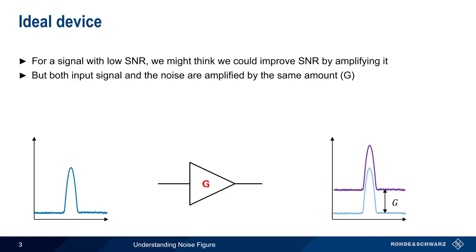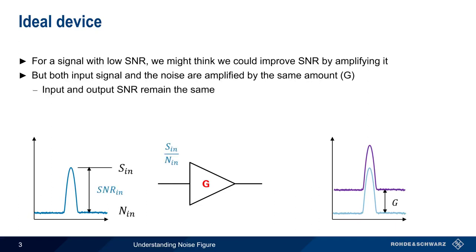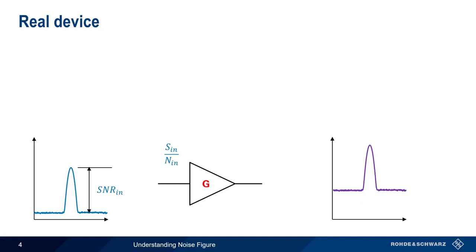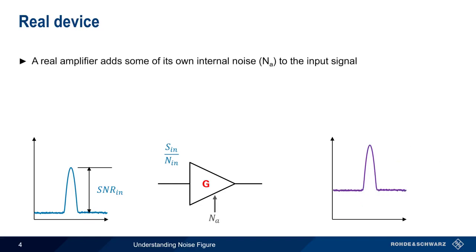This means that the signal-to-noise ratio of the input and the signal-to-noise ratio of the output would be the same. Note that in this example, all of the noise is external noise. An ideal amplifier wouldn't add any internal noise of its own to the signal. However, all real-world amplifiers have some amount of internal noise that gets added to the input signal. We'll call this internal noise NA.